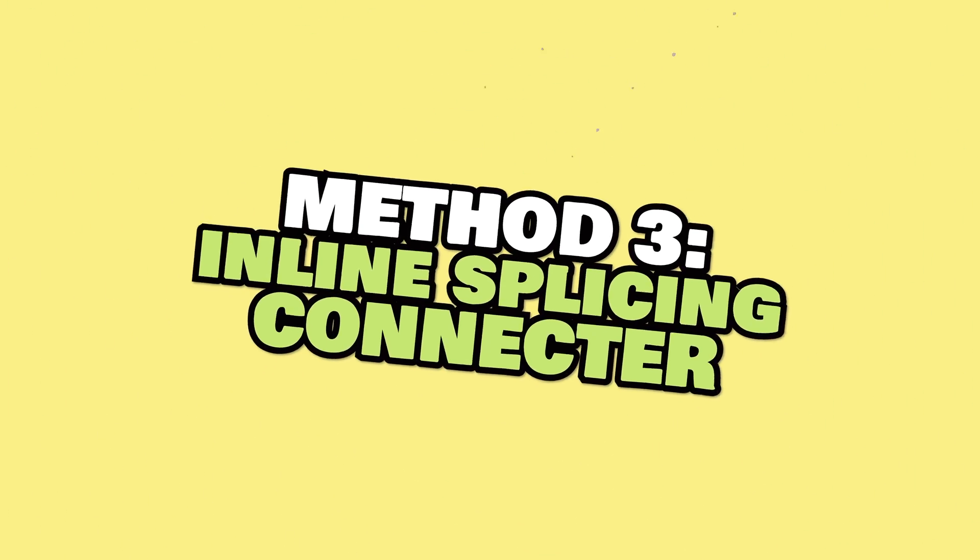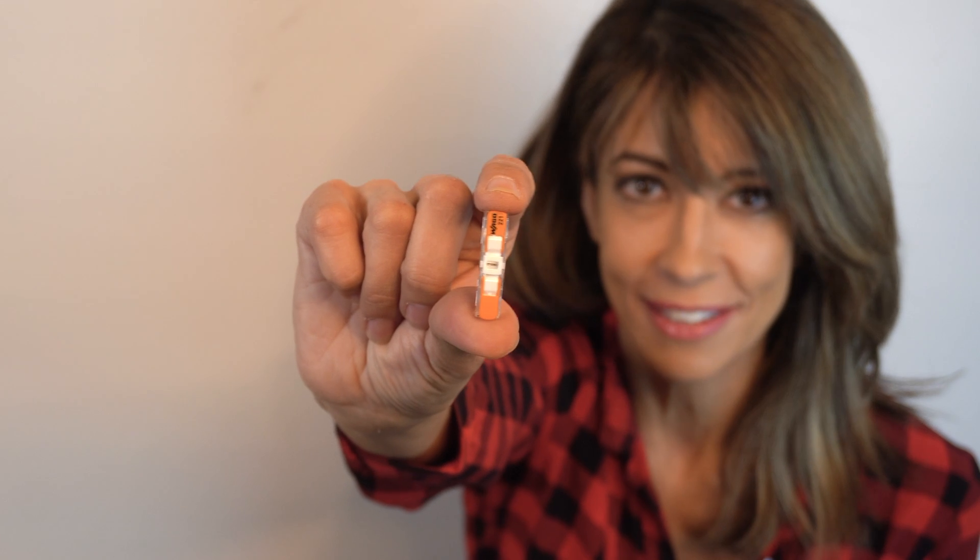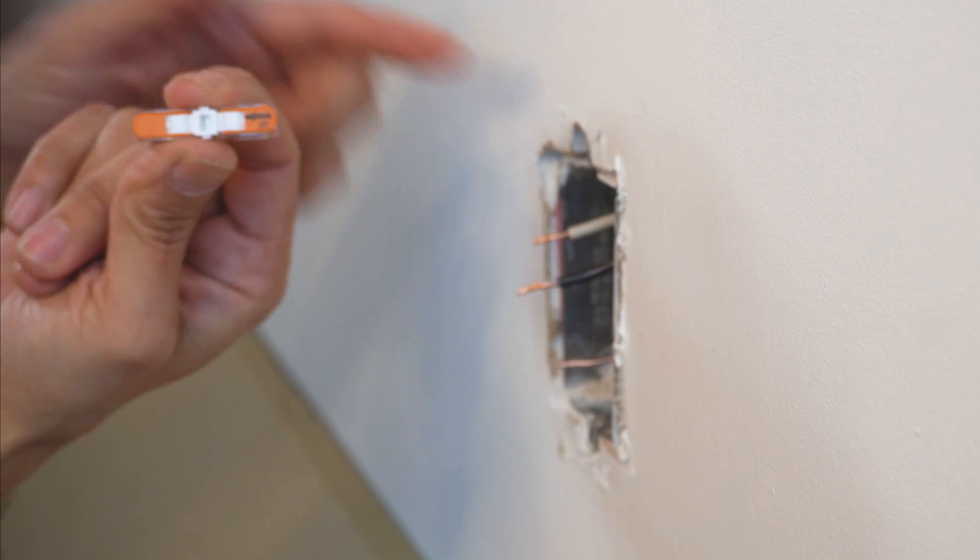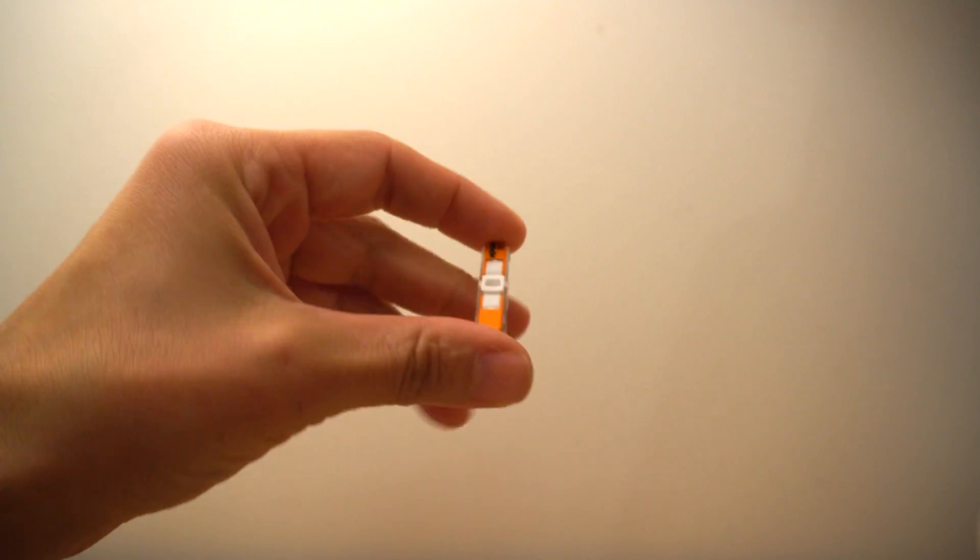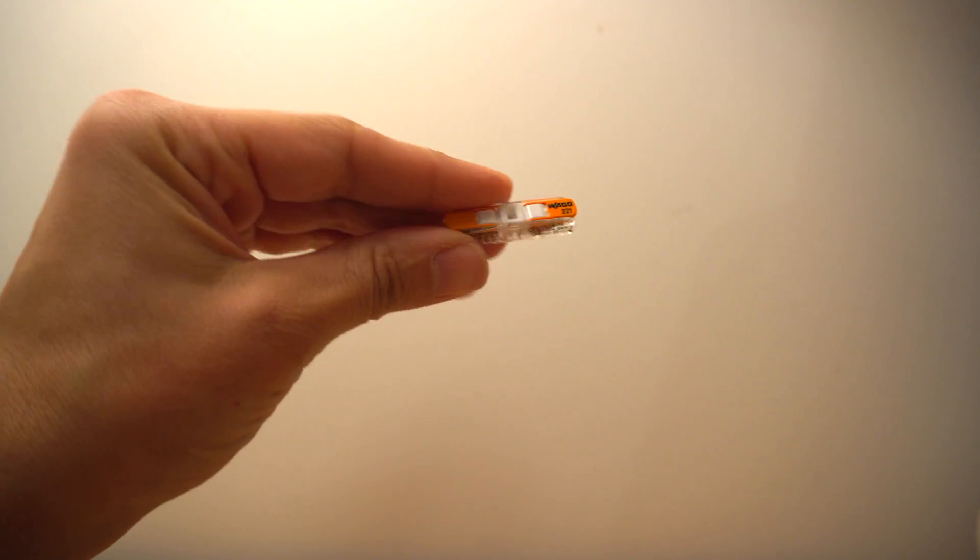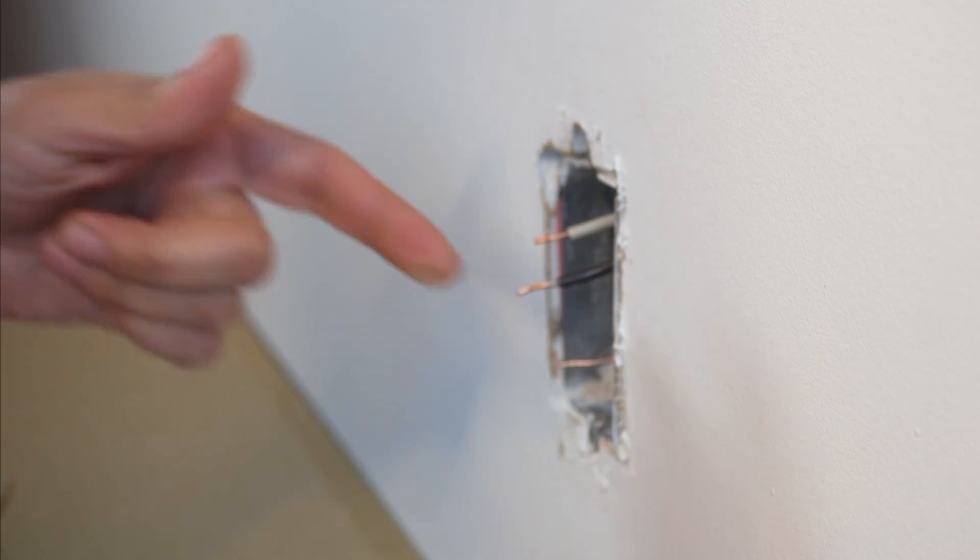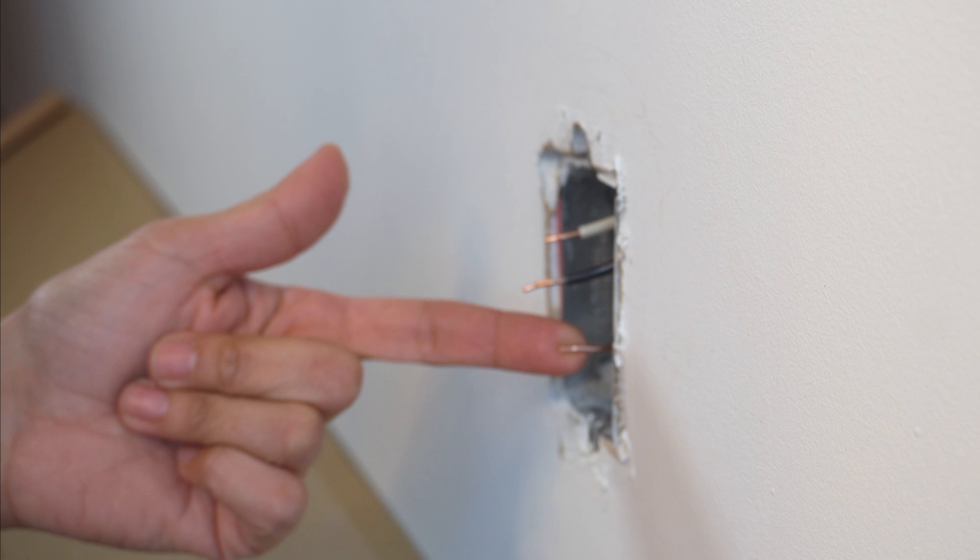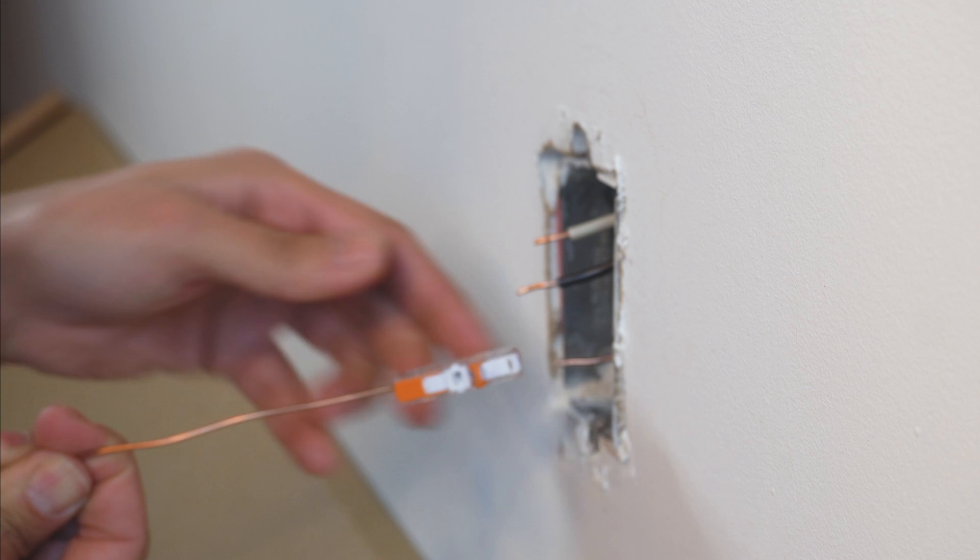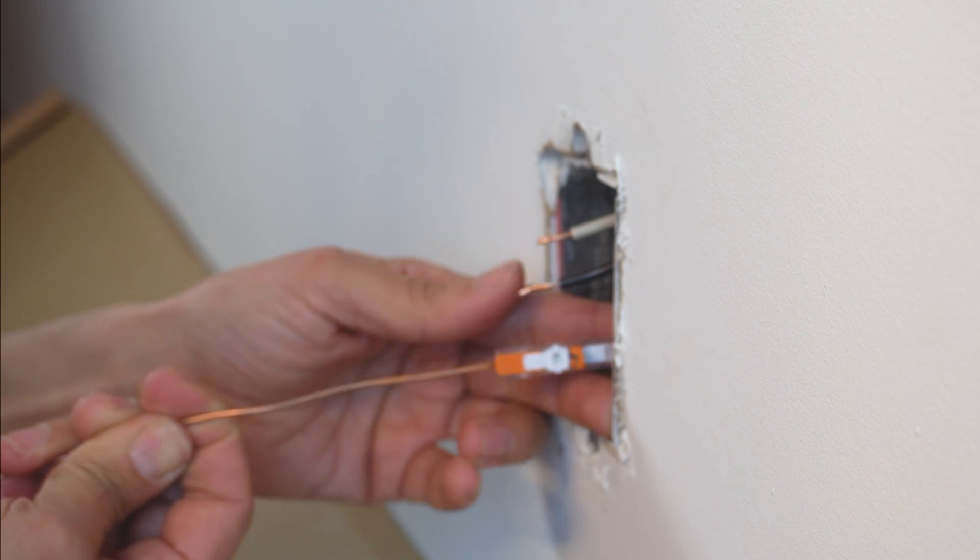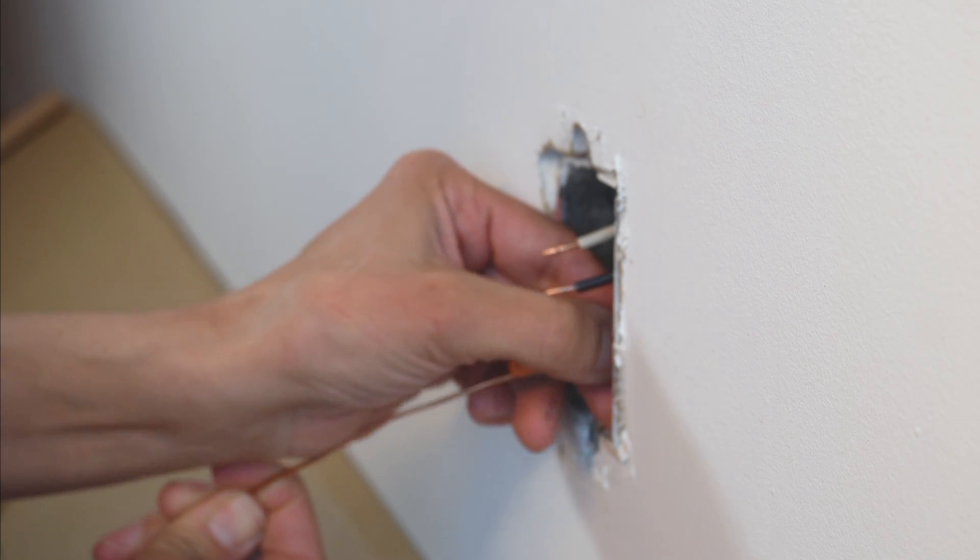Method number three is the WAGO inline splicing connector. So to fix these wires, we are going to use the WAGO 221 lever connector. Now, it's really important to note the white part here on the front of the lever. That's critical. We'll get to that in a second. We're going to start off with our ground wire and I've inserted the inline splice onto it. I've left the lever door open and I'm going to push that in all the way until it meets resistance. And then I'm going to close the lever.